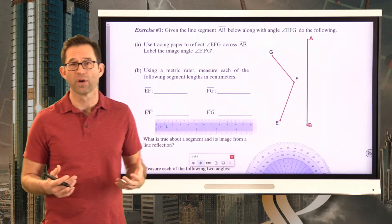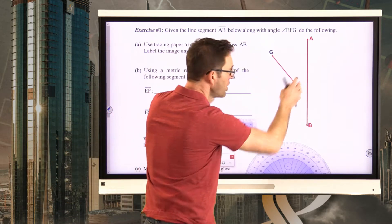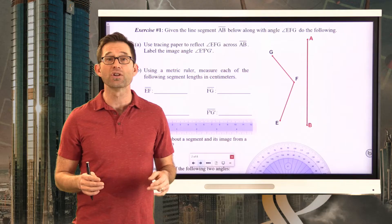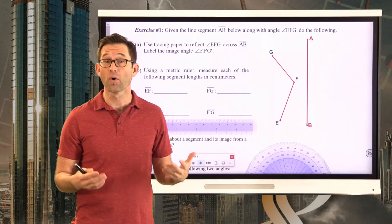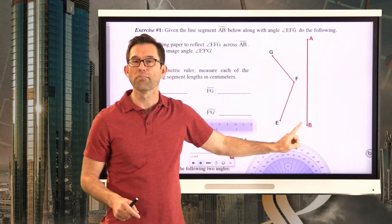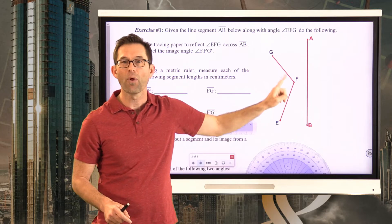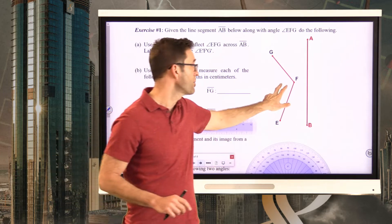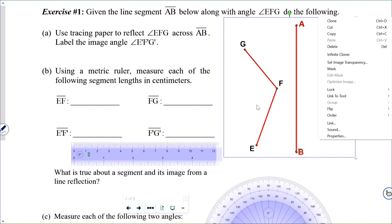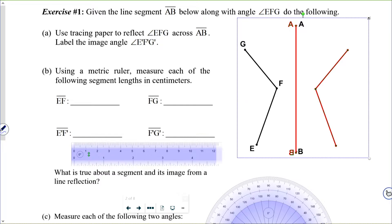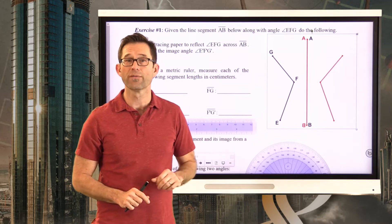Let's review how you do a reflection with tracing paper. Take your tracing paper and place it over the angle and the line of reflection — the line of reflection is literally your mirror. Trace out the angle and the line segment, and make sure to label all the points: G, F, E, A, and B. Then take the tracing paper and flip it.